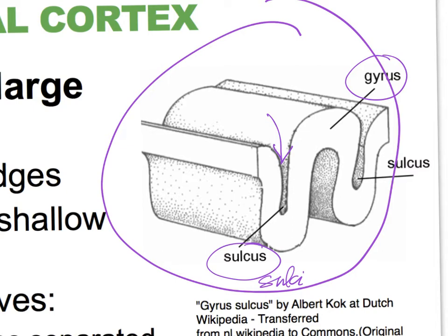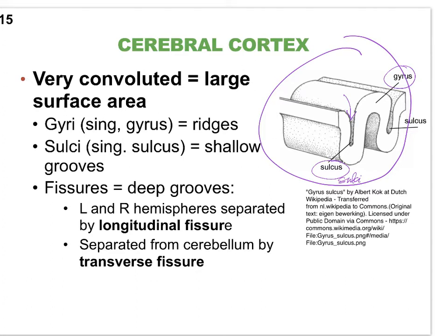Sometimes we have a very deep invagination, and then we'll refer to that as a fissure. We'll take a look at two major fissures — fissures are very deep invaginations, you can almost think of them as a very deep sulcus. We'll take a look at where they are in the cerebral cortex.